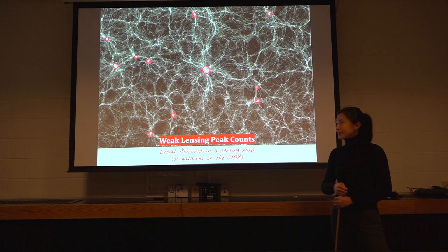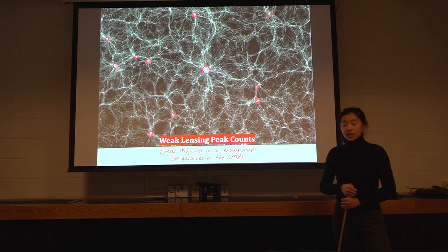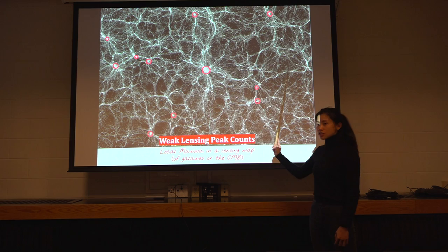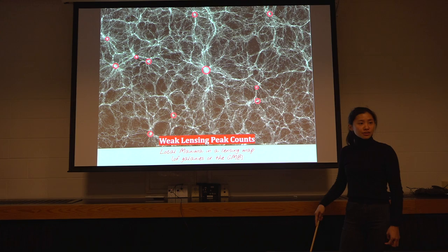Okay, so weak-lensing peak counts, and we hope this can be, this is a very simple statistic. You simply scan through all the pixels in your map and pick out those pixels with higher value than the surrounding 8 pixels. Very simple algorithm.